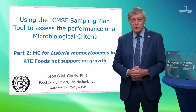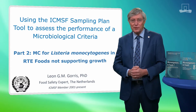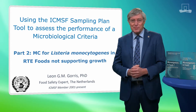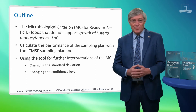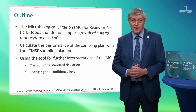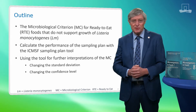In the current presentation, I will use the ICMSF sampling plan tool to recreate and interpret the microbiological criterion that Codex recommended for ready-to-eat foods that do not support growth of Listeria monocytogenes. In Part 3, I will do the same for the MC for RTE foods that do support LM growth. I will start with sharing the details of the MC that Codex has proposed. Then I will use the ICMSF sampling plan tool to calculate the performance of the sampling plan using the assumptions chosen by Codex. Finally, I will determine the impact on performance of changing two key parameters: the standard deviation of the distribution and the confidence level to detect non-compliant lots.